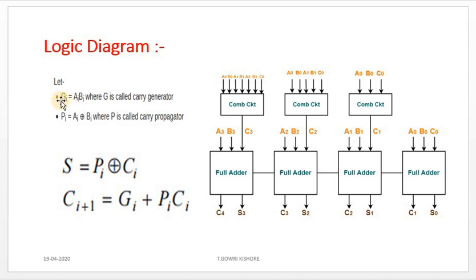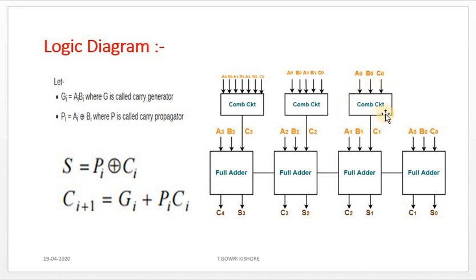To produce the carry ahead of time, we use carry-generator and carry-propagator equations. With these combinational circuits, we can produce the carry for the last three full-adders. The initial full-adder receives carry-in directly, while the rest get carry generated by the combinational circuits using the carry-generator G_i = A_i · B_i and carry-propagator P_i = A_i XOR B_i.